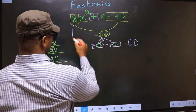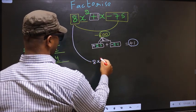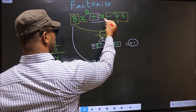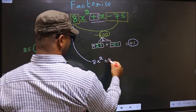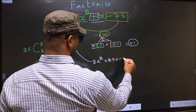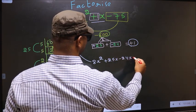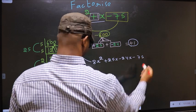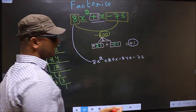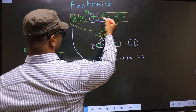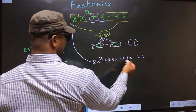Now you should change this to 8x square. In place of plus 1x, now we should write this: plus 25x minus 24x minus 75. Did you understand? In place of plus 1x we have written this.